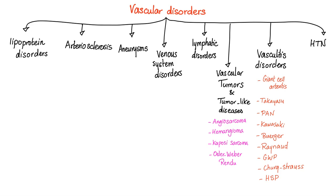Vasculitic disorders include: Giant cell arthritis, Takayasu, PAN (polyarteritis nodosa — not to be confused with pancakes or pancytopenia), Kawasaki, Buerger's disease, Raynaud's phenomenon, granulomatosis with polyangiitis, Churg-Strauss syndrome, and Henoch-Schönlein Purpura. And don't forget the mnemonic for Henoch-Schönlein Purpura — HSP.